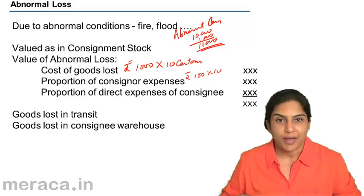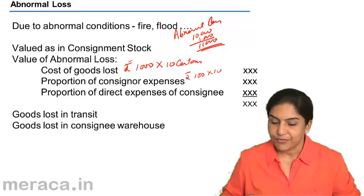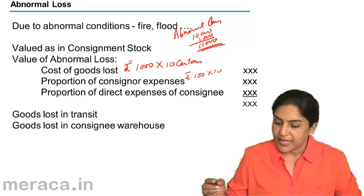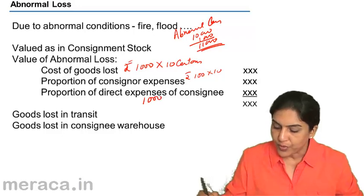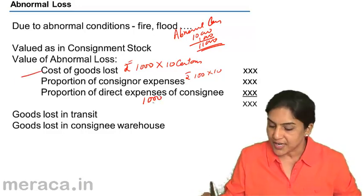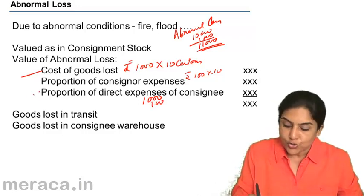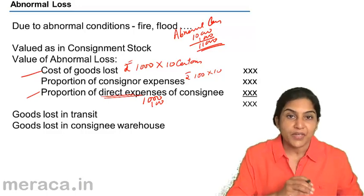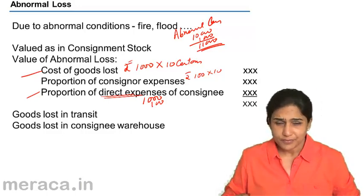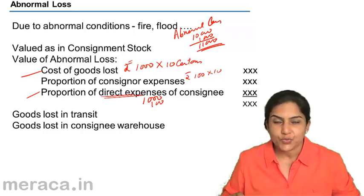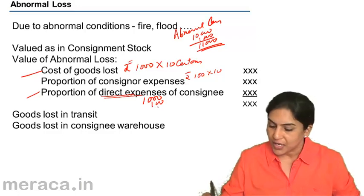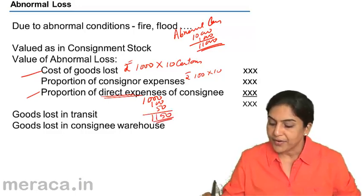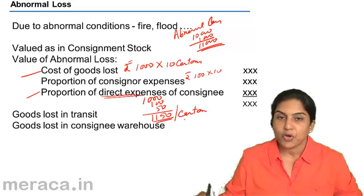However, if the goods reached the consignee's warehouse and thereafter some goods are lost, then each carton lost would be valued at 1,000 (purchase cost) plus 100 (proportion of consigner expense) plus the proportion of direct expenses of the consignee. The consignee incurred 5,000 for transporting goods from the station to the warehouse; with 100 cartons, the cost is 50 per carton, giving a total cost of 1,150 per carton.